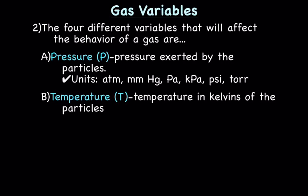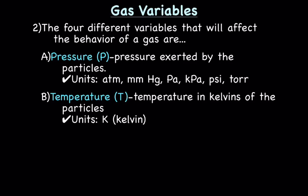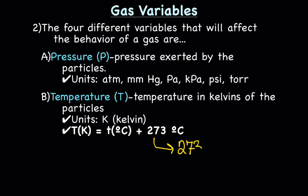Then we have temperature, and here we're talking about temperature in Kelvin. That is really important — when dealing with the gas laws we have to use the scale of Kelvins. Not degrees Celsius, not degrees Fahrenheit — Kelvin. In science, usually when we actually measure a temperature, we use degrees Celsius. So how do you convert from Celsius to Kelvin? Really easy — add 273.15.